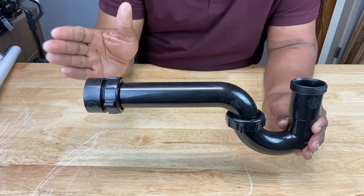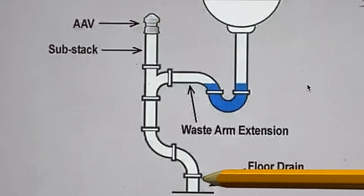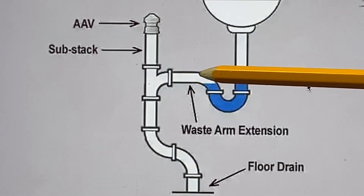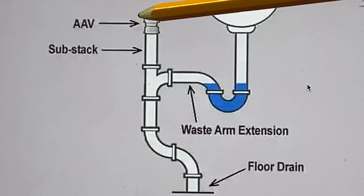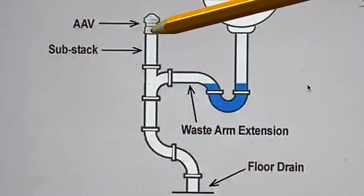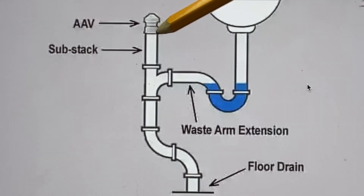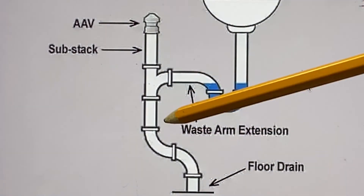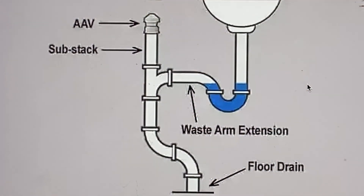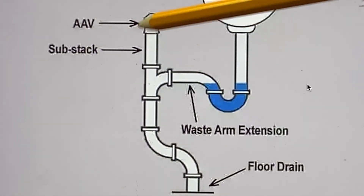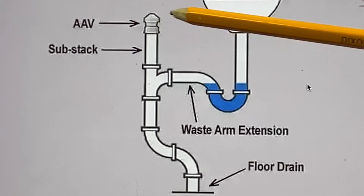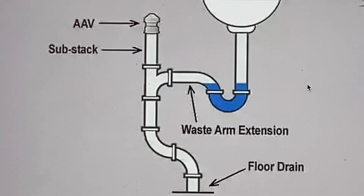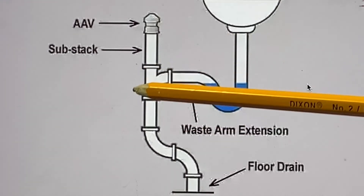Fortunately today you have other options. Here's an illustration of a typical S-trap to P-trap conversion. We added the waste arm extension, but we also added a substack. On top of that substack we have what's called an AAV — an air admittance valve. An air admittance valve allows air to enter the waste side of the drain to facilitate the draining process, but it won't allow sewer gases to come out. Essentially it's a one-way valve, so sewer air won't be allowed to escape into your kitchen, bathroom, or house. Instead of having to break through your wall to add an actual vent pipe all the way to the roof, you can just add a substack here and use this conversion method under the sink.